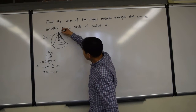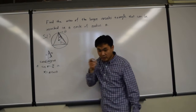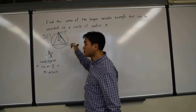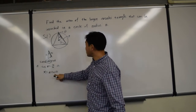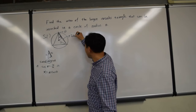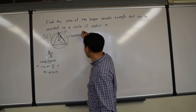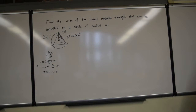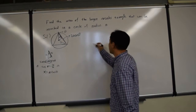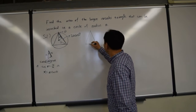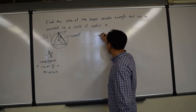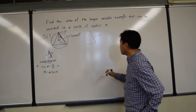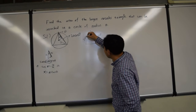So we know that this half-side is A cosine theta. Therefore the full base of this portion is 2A cosine theta. And because we are trying to make an isosceles triangle, this side is also 2A cosine theta, and the angle in between is 2 theta.